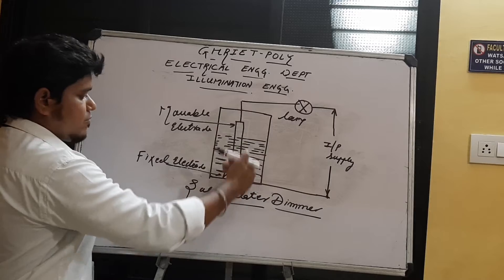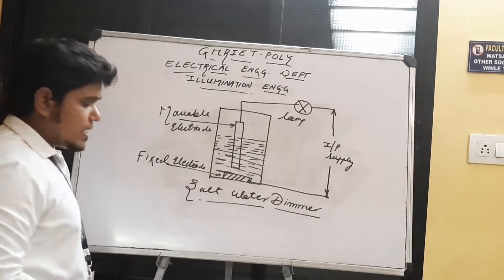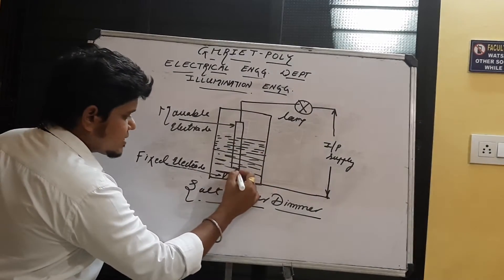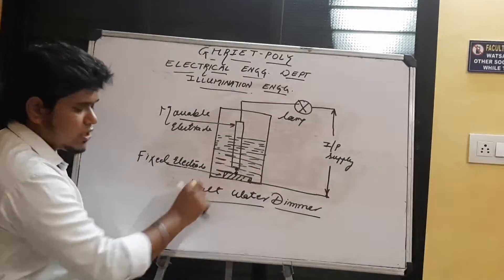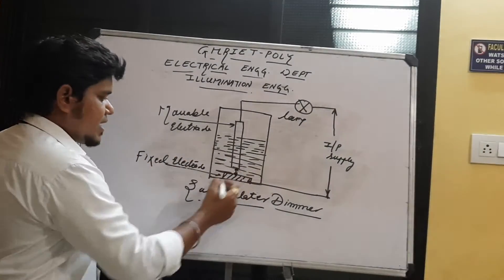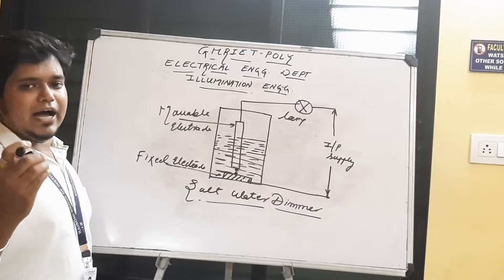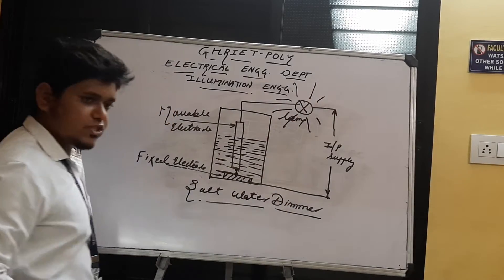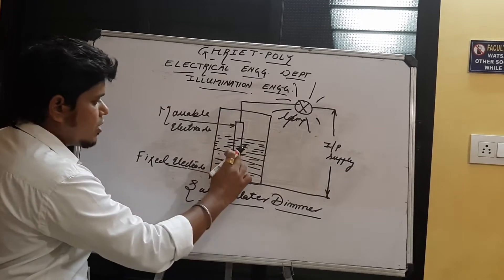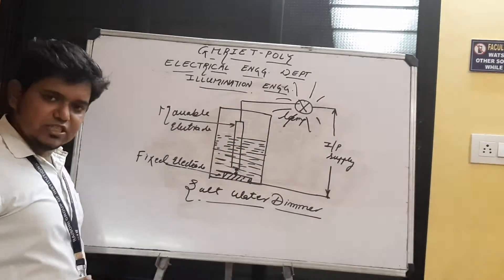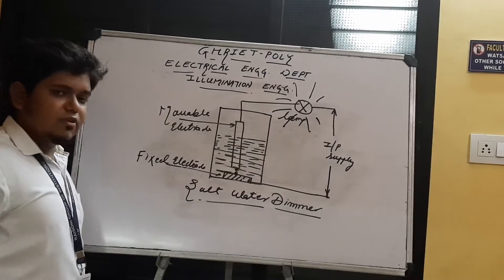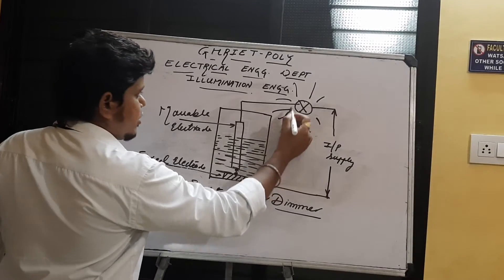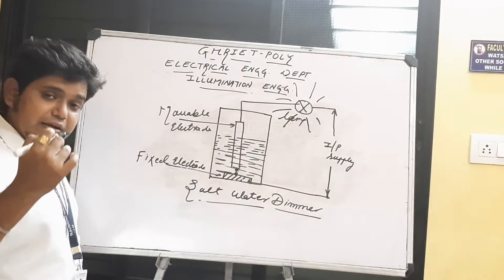we have to move the movable electric rod up and down. When we move the movable electric rod to the downside, the distance between both the electric rods will be minimum. At that time, the resistance will be less and voltage conductivity will be high. As the voltage is high, the lamp will glow more. This is the first situation: when the movable electric rod comes down towards the fixed electric rod, resistance is less, voltage is high, and the illumination of the lamp will be very high.